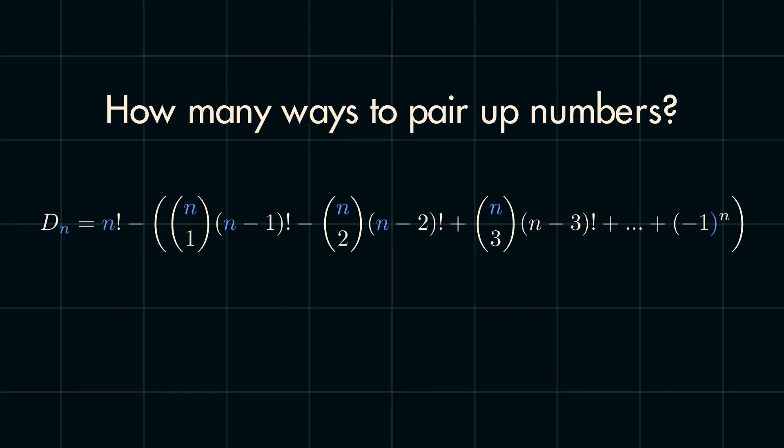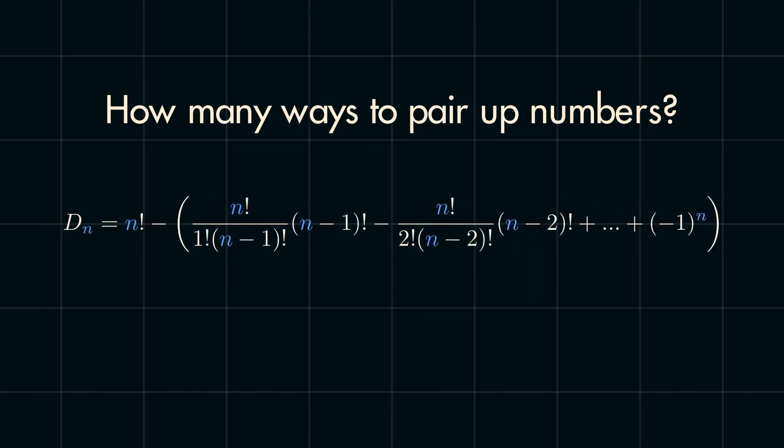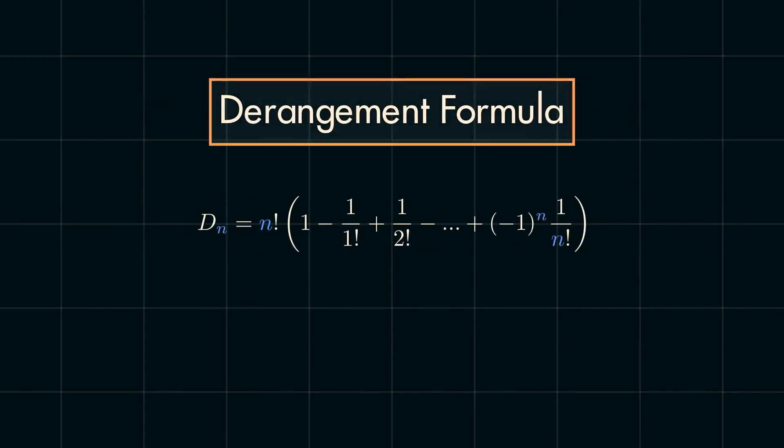We are now super close to our final answer, but one last simplifying step we can take is first expanding out the combination notation using the definition of a combination. Doing this, it is clear to see we can cancel out part of the numerator and denominator because of the n factorial from each term to leave us with our almost final answer.